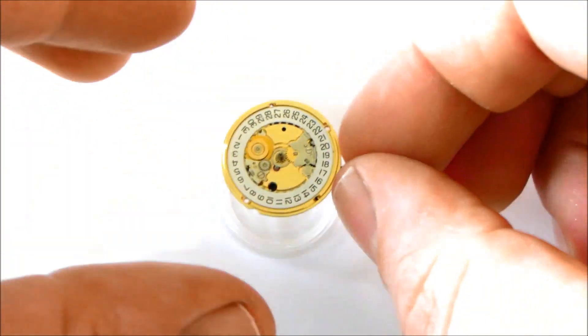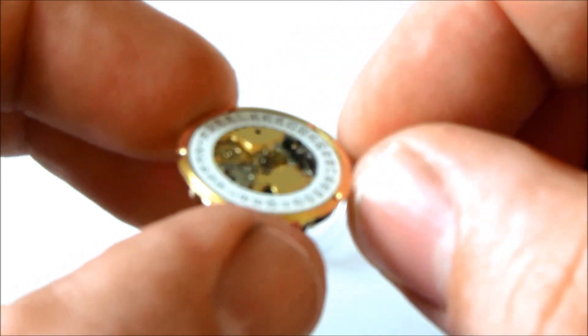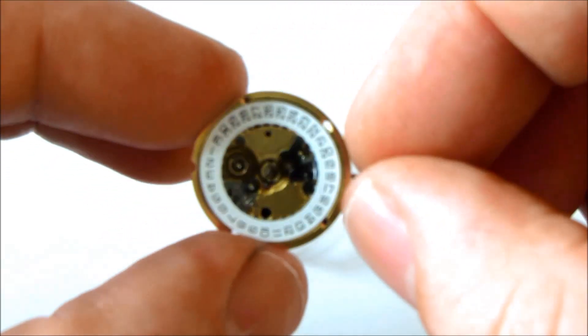This is ETA movement reference 956612. It has hours, minutes and sweep seconds with the date at 3 o'clock.